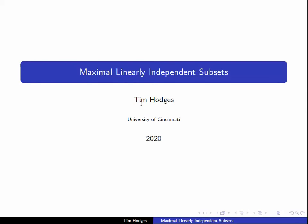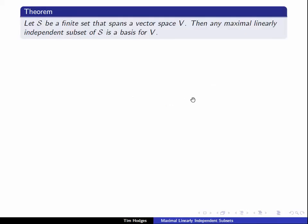Hi, this is Tim Hodges with another short video on abstract linear algebra. Today we're going to talk about maximal linearly independent subsets. In particular, I want to talk about the proof of the following result: that if we have a finite set that spans a vector space V, then any maximal linearly independent subset of S is a basis for V.